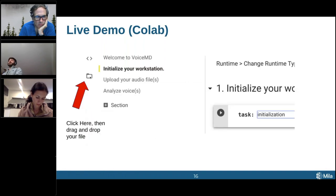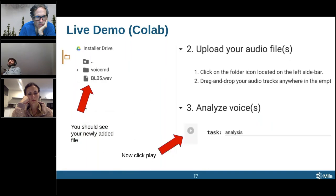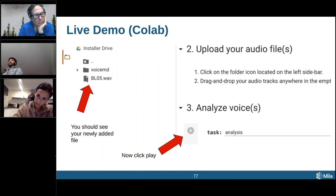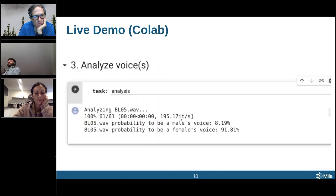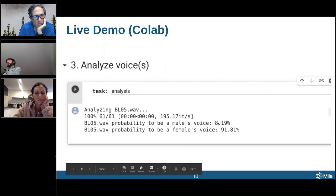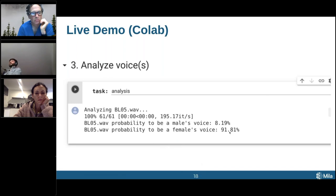Then you click on the folder icon, and once you click it you'll be able to drag and drop files — upload audio files into your workspace. Your WAV file will appear there. Once your file is properly added, you can hit the play button on the 'analyze voice' section, and it's going to start running. Once it runs, it'll analyze the WAV file and tell you the probability that it was a male's voice and the probability that it was a female's voice. In this case, this was an actual female example.